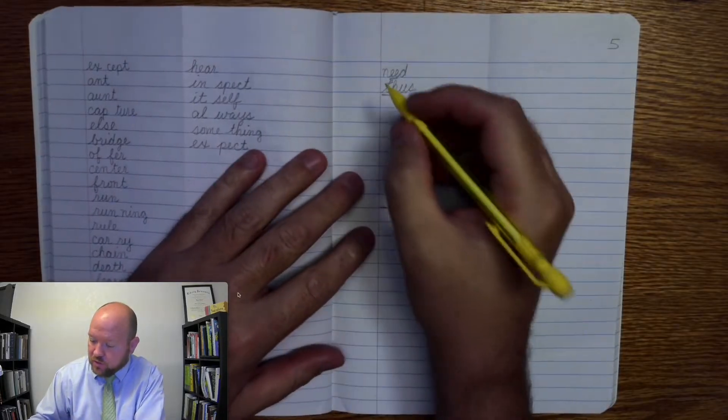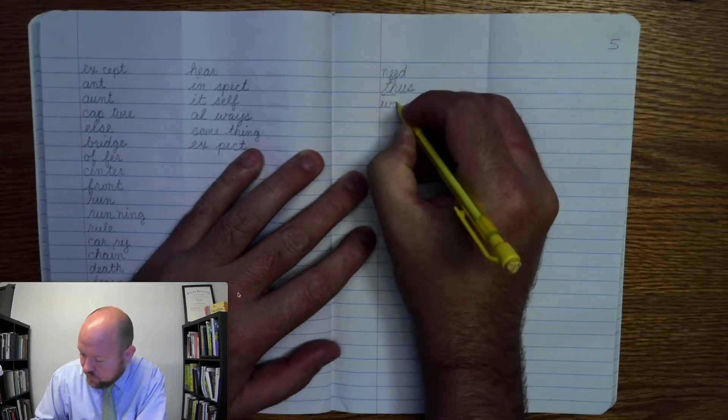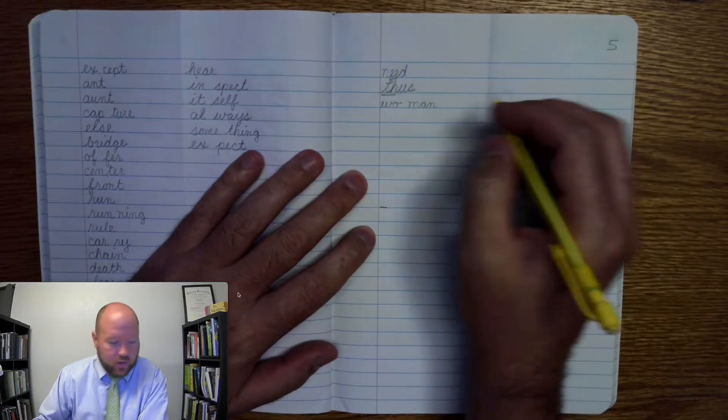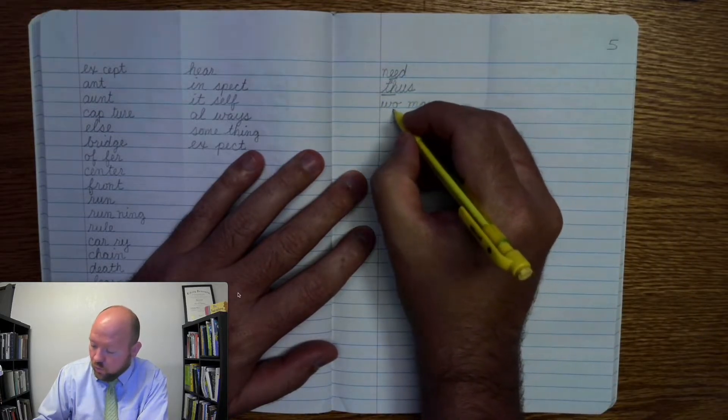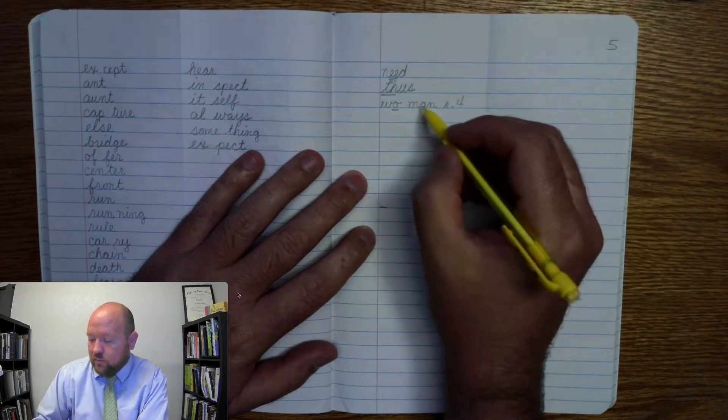So let's write that as two syllables. Woe. Man. Markings. Woe, O once, rule four. M-A-N.